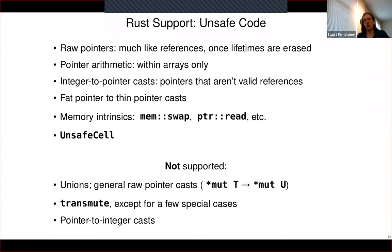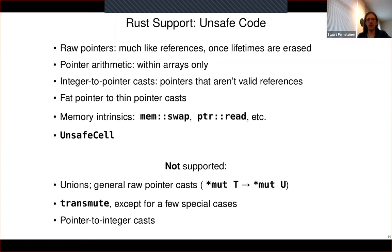Things we don't support mostly come down to not having that underlying byte representation. Unions and raw pointer casts are both ways of interpreting a sequence of bytes as some other type, and we don't support that because our memory model has no notion of what it means to read a U32 out of a pointer to a bunch of U8s. Transmute is similar, though we've implemented some special cases for common things like converting an integer to an array of bytes. We also don't support pointer-to-integer casts, so we don't have to deal with a consistent view of memory on a flat address space.